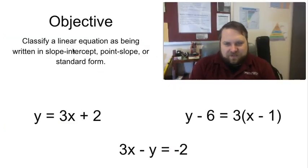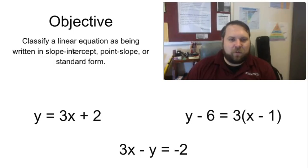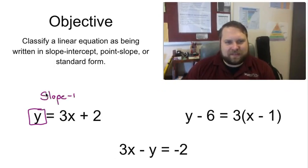Recalling now that our objective was to classify these, hopefully you can now look at the three equations we started with and tell me what form they're in. y equals 3x plus 2. We notice the y by itself on one side of the equation, letting us know that this is slope-intercept form, y equals mx plus b.